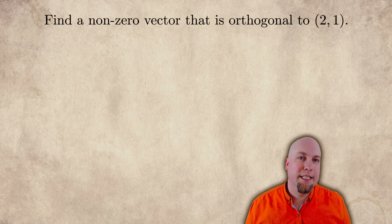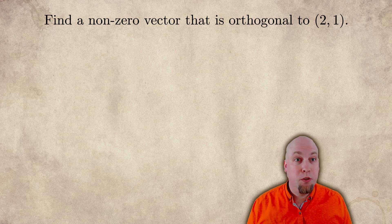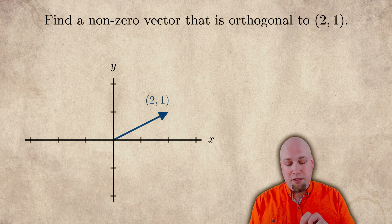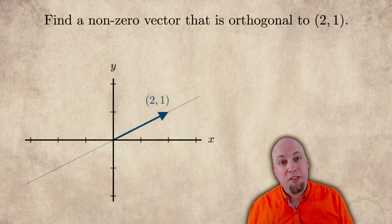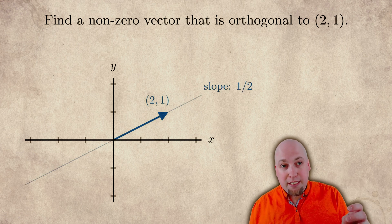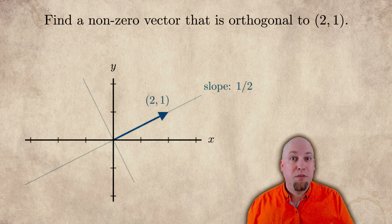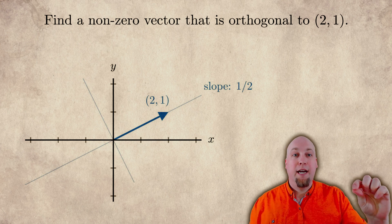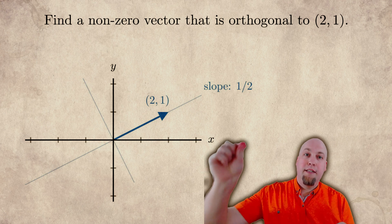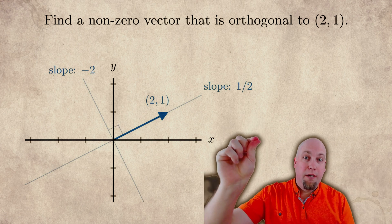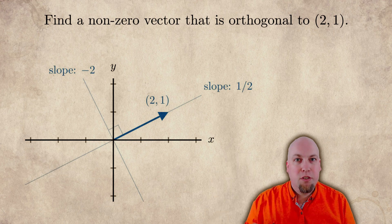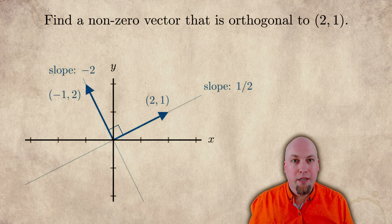Let's start off in two dimensional space where this problem is simple enough that we don't even need a linear system to help us solve it. Suppose that we're given the vector (2, 1), and we're trying to find a vector that is perpendicular to it — orthogonal to it. We can notice that this vector (2, 1) lies on a line that has slope one half. One way to find a line that's perpendicular to another line is to construct a line that has slope equal to the negative reciprocal. So if the original line had slope one half, I want my orthogonal vector on a line that has slope negative two. I can just pick any vector whose y coordinate is negative two times the first coordinate — for example, the vector (-1, 2) does the job.